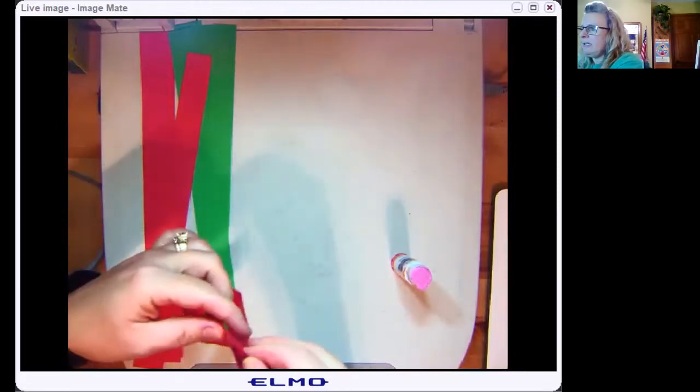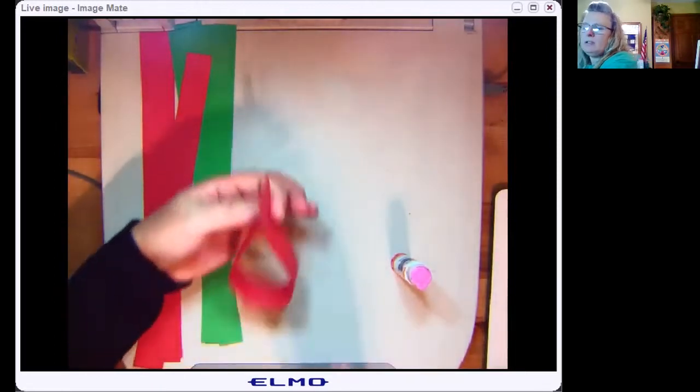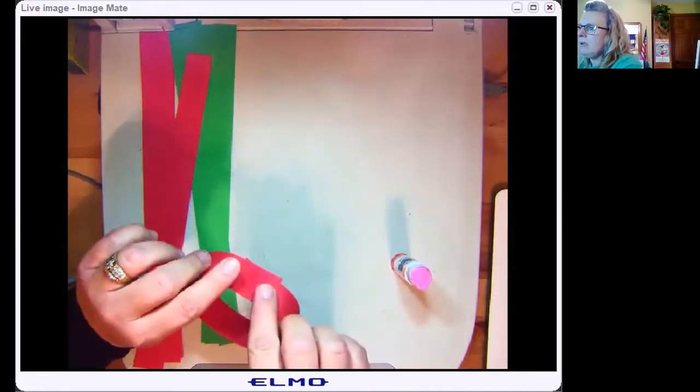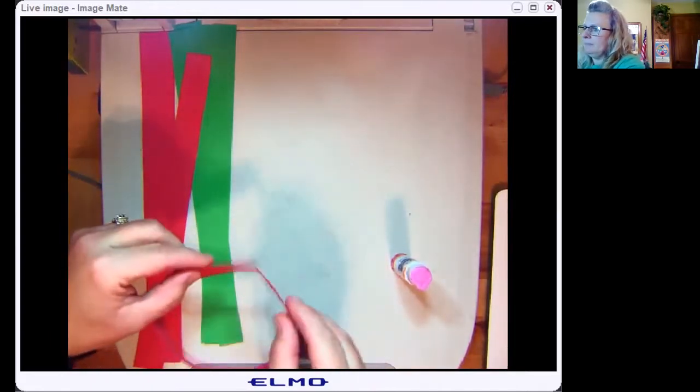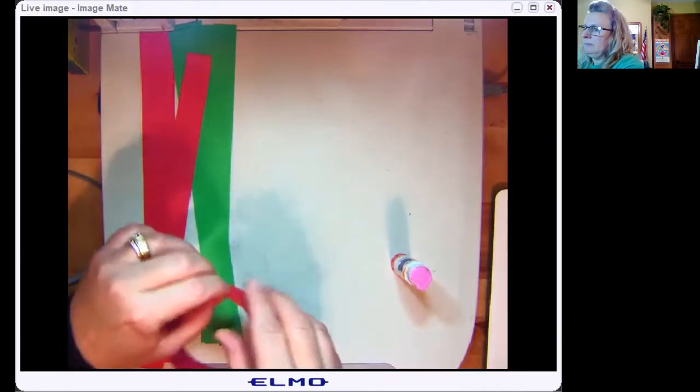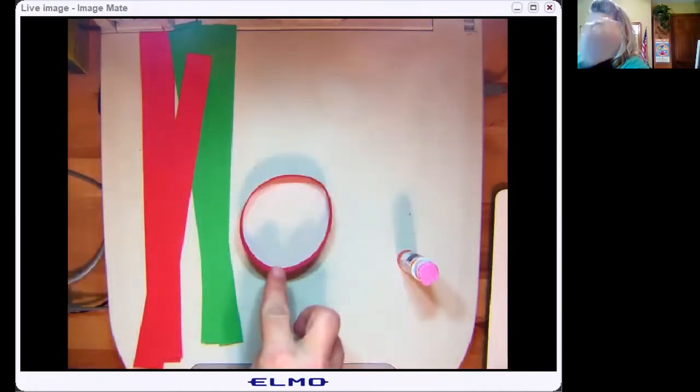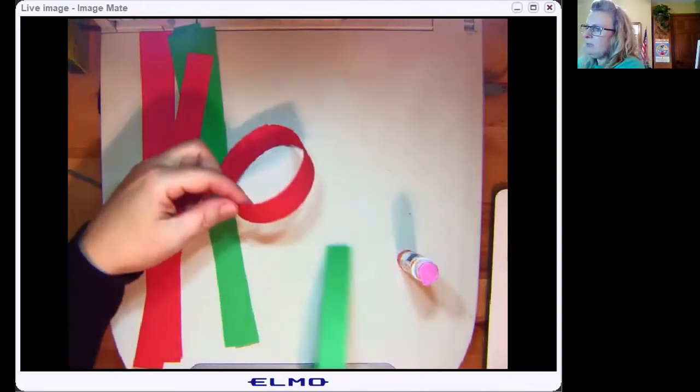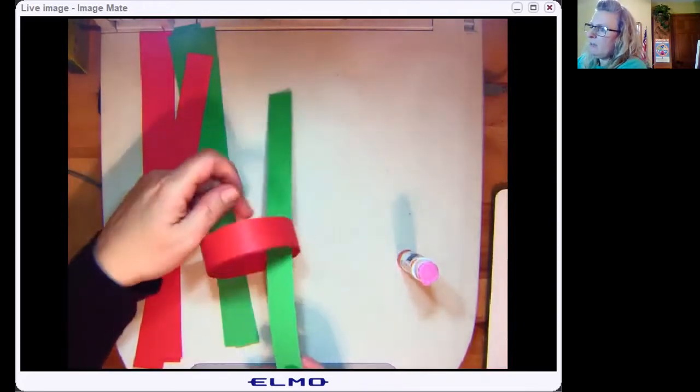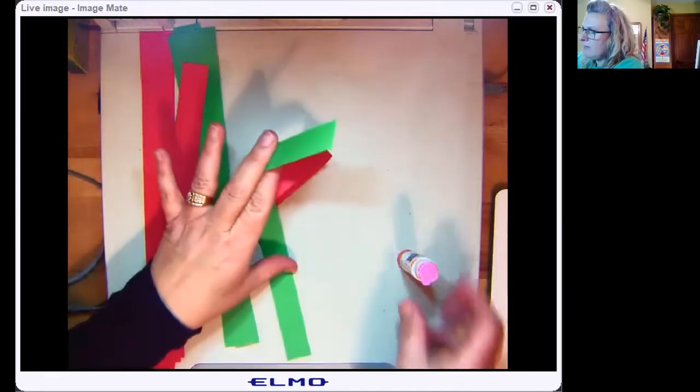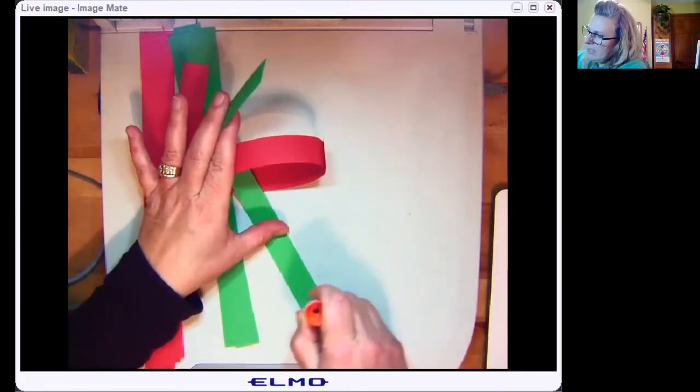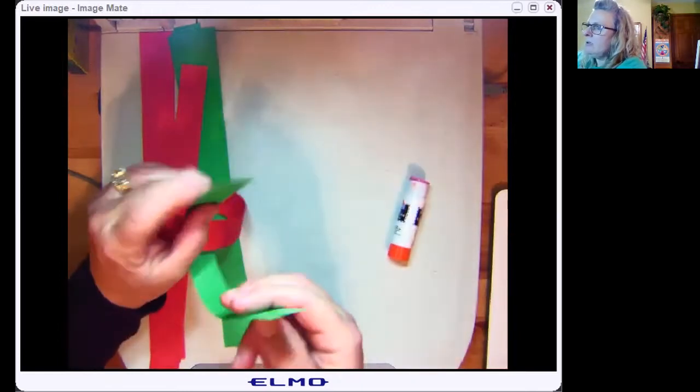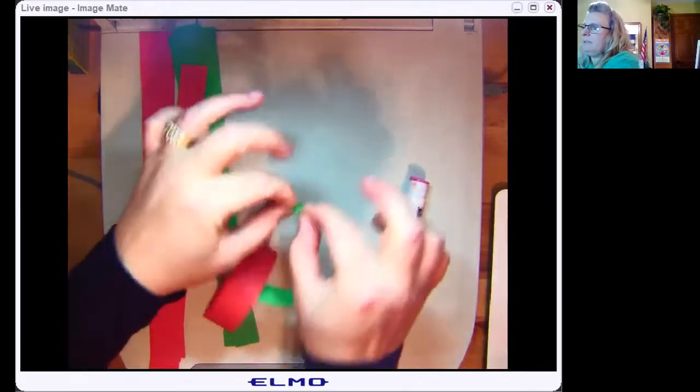Make sure you're not gluing it together like this. You don't want it to look like a raindrop or a teardrop. It should be a circle. Now I started with red. So my next color is going to be green. So what I do is I take my green and I slip it through and then I do the same thing. I put glue on the end, little circle of glue, and I close it up like a circle. See that?